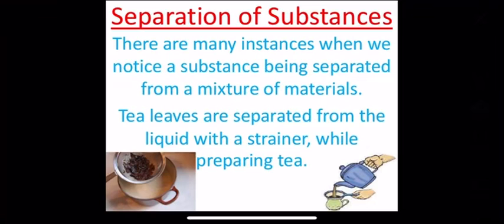Good morning all, I am Bhavna Sharma. Today we are going to discuss chapter number 5, Separation of Substances. There are many instances where we notice a substance being separated from a mixture of materials. For example, tea leaves are separated from the liquid with a strainer while preparing tea. As we see in our daily lives, many substances and mixtures can be separated using various methods. In this video we will discuss about some of those methods.